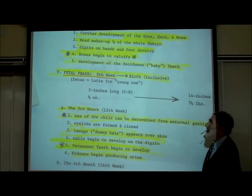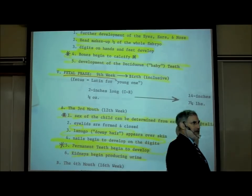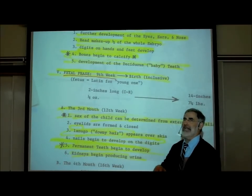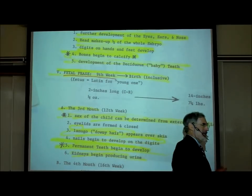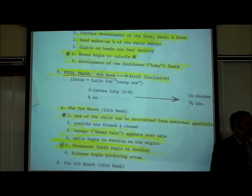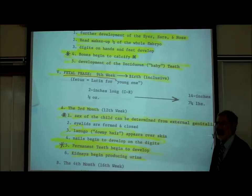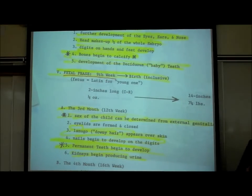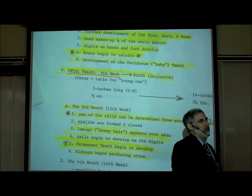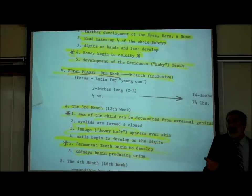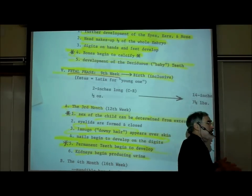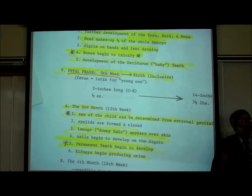It's really biologically all one continuous process, but once it reaches nine weeks there is legal significance — various procedures that can be done to an embryo can't be done to a fetus. The word fetus means 'young one.' By nine weeks, the embryo clearly looks human. Earlier — during the third, fourth, and fifth week — a human embryo could have been a chicken, dog, or monkey embryo. But by nine weeks it clearly looks human.